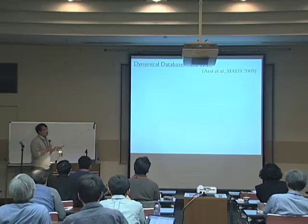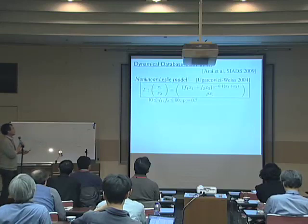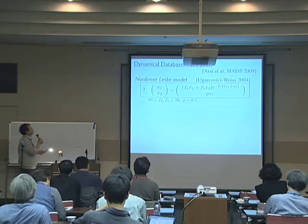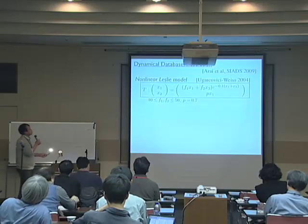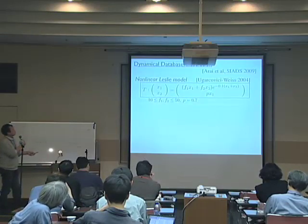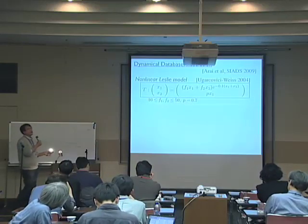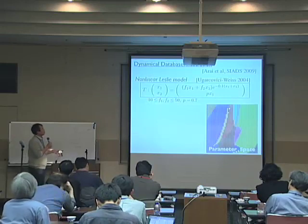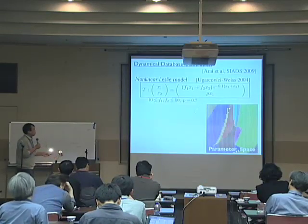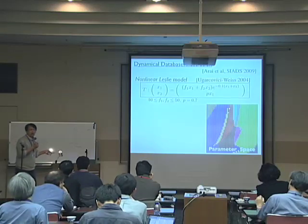We tested this idea on one example, which is a nonlinear population dynamics model called the nonlinear Leslie model, which is a two-dimensional map. X1, X2 are sent to those expressions. There are three parameters, F1, F2, and P, where P is fixed to be 0.7, and F1 and F2 vary. So we have a two-dimensional parameter space, which turns out to be basically decomposed into those colored regions. Each color corresponds to one kind of Conley-Morse graph, and different colors correspond to different types of Conley-Morse graphs.